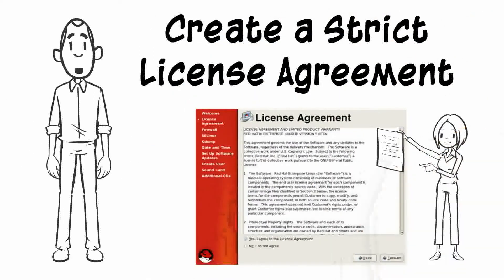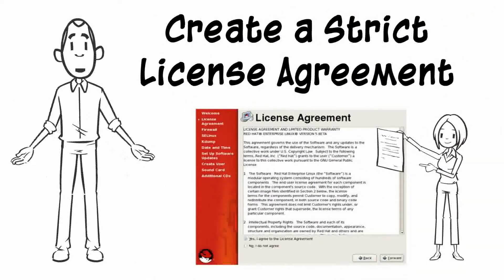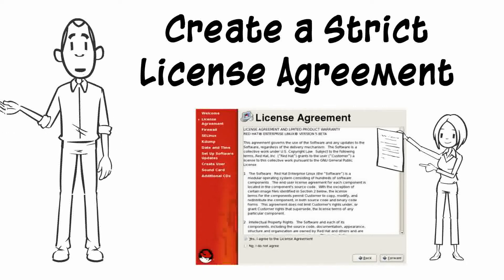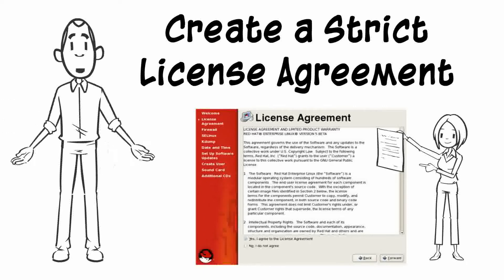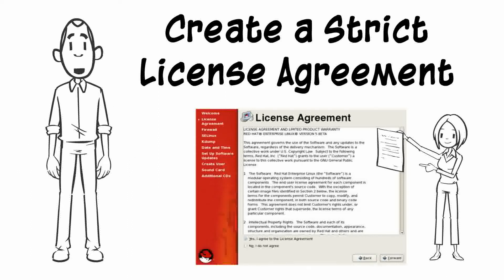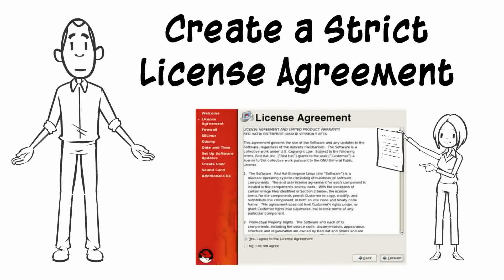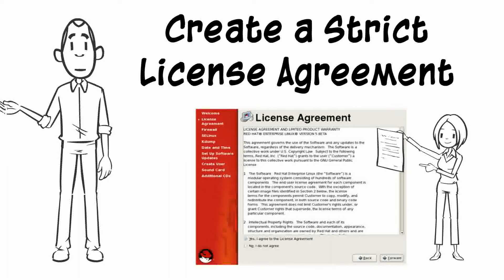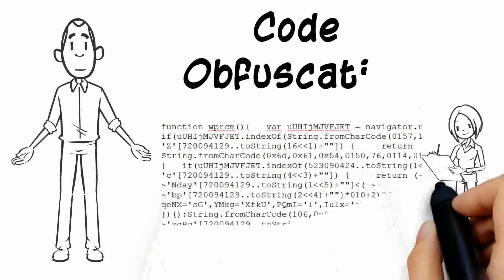Step 2: Create a strict license agreement. This is fairly easy to do. First, make a list of do's and don'ts for others regarding your code. Once this is done, it means that the user can be legally sued, therefore protecting your software from copying.